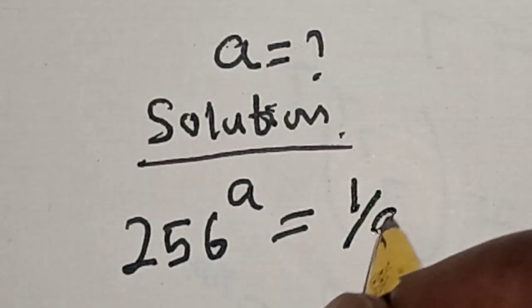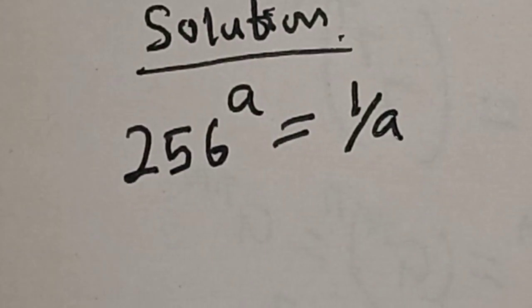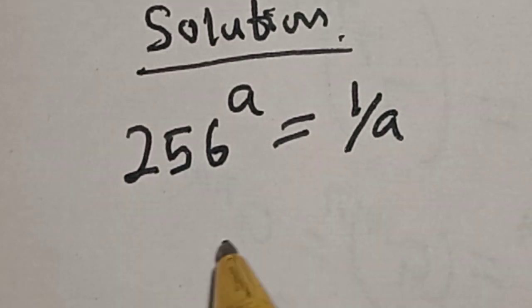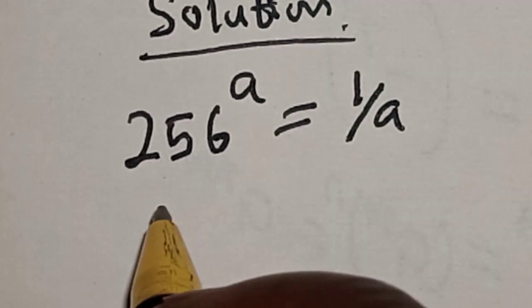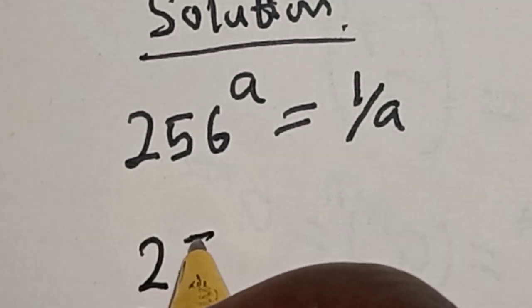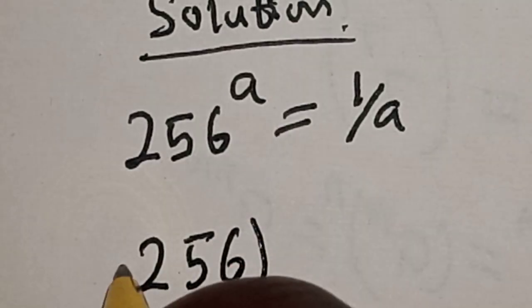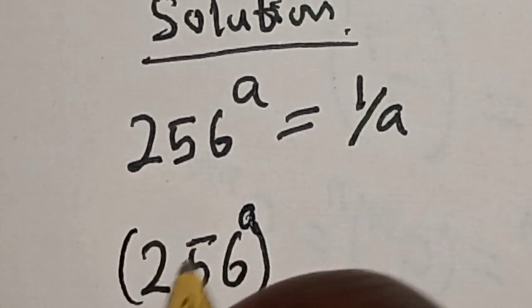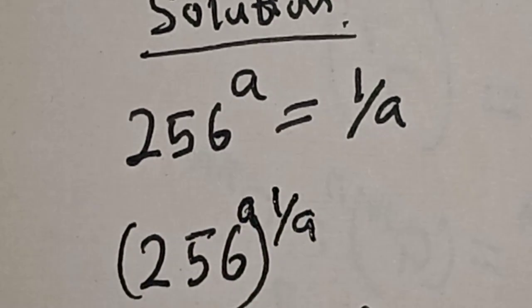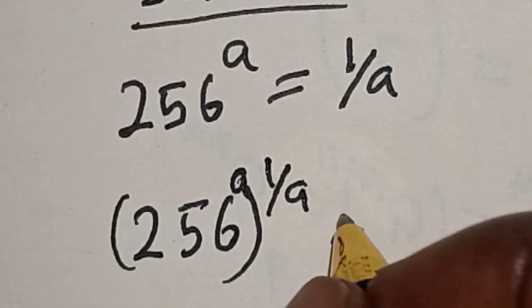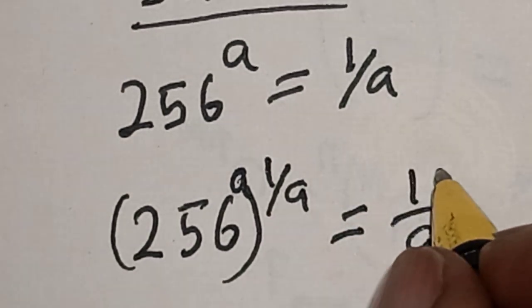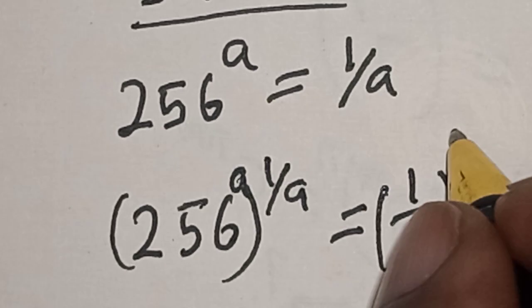Solution: we have the given equation 256 raised to power a is equal to 1 over a. Now let's multiply the exponents of both sides by 1 over a. That is, 256 raised to power a, multiplied by 1 over a, is equal to 1 over a raised to the power of 1 over a.